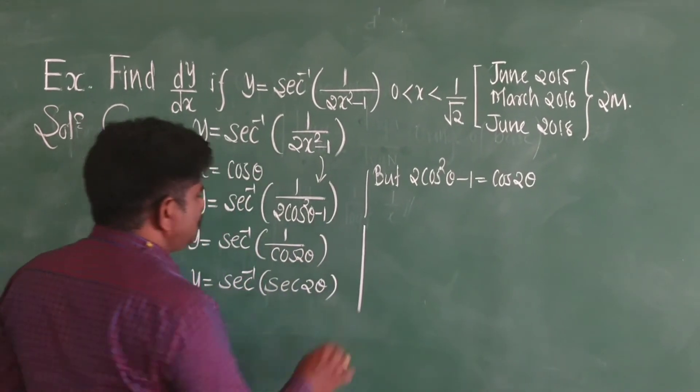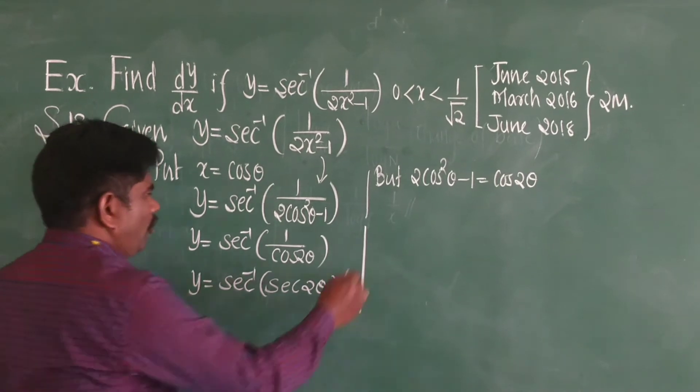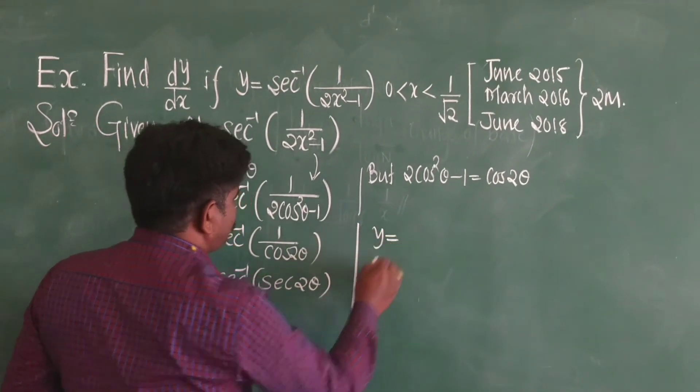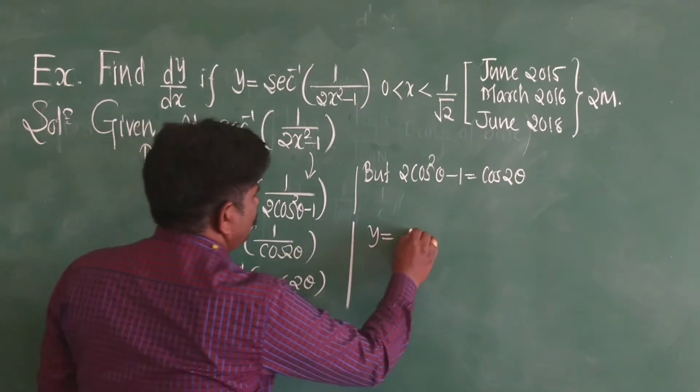By inverse trigonometric properties, now y will reduce to only 2 theta.